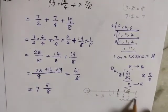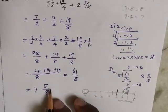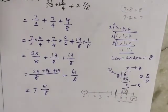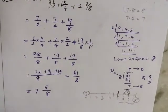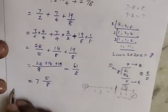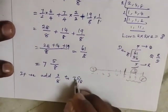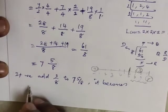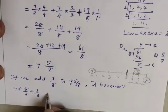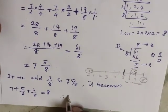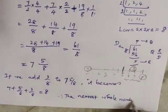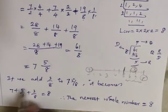7 5/8 lies between 7 and 8. If we add 3/8 to 7 5/8, it becomes 7 + 5/8 + 3/8 equals 8. Therefore, the nearest whole number is 8.